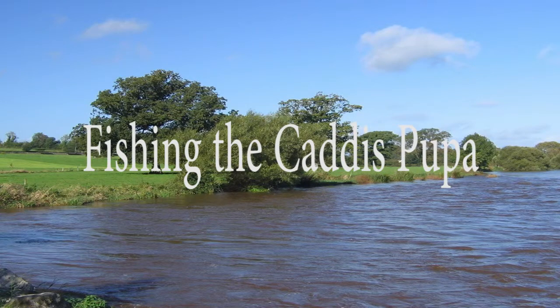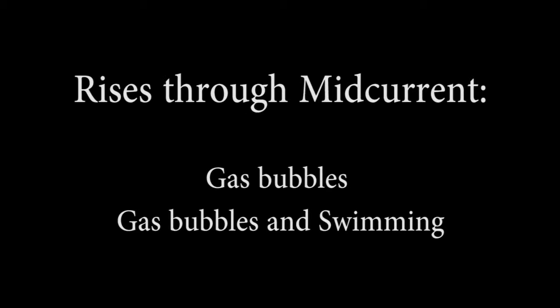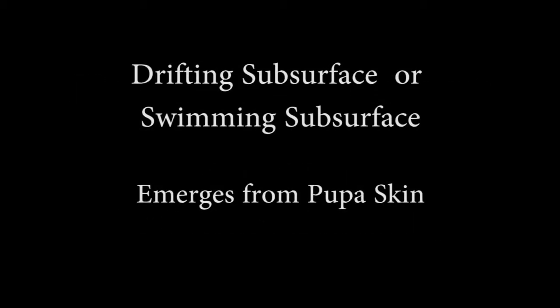Now that we've tied our caddis pupa for selective feeding, let's learn where and how we should fish it. The literature varies as to what happens to the pupa when it leaves its pupa shelter at the bottom of the stream. Some pupa drift for long periods along the bottom and are of great interest to the fly fisherman. Of continuing interest are the pupa as they rise through the mid-currents. Once near the surface, the pupa will drift for a variable period subsurface until it ultimately pops through the surface and emerges as a fully formed adult.